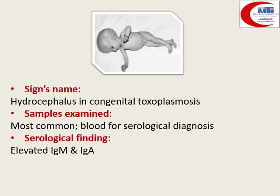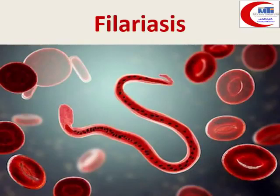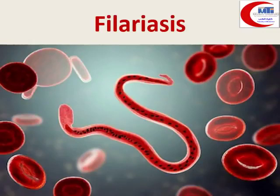We have now finished toxoplasmosis. In toxoplasmosis, we have two diagnostic stages: the trophozoite and the tissue cyst. We covered two clinical cases — one related to congenital toxoplasmosis and one related to acquired infection, which is cerebral toxoplasmosis. Now let's move on to filariasis, specifically lymphatic filariasis, which is covered in the blood module.